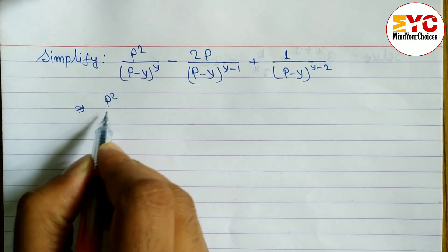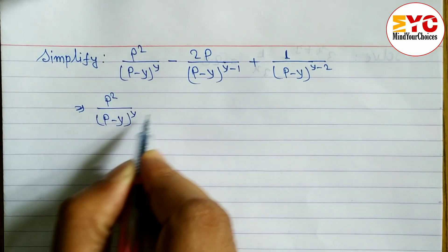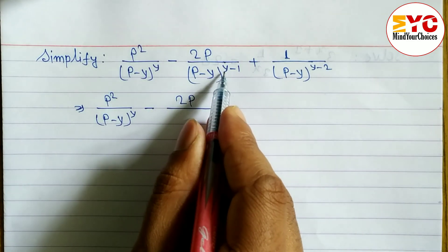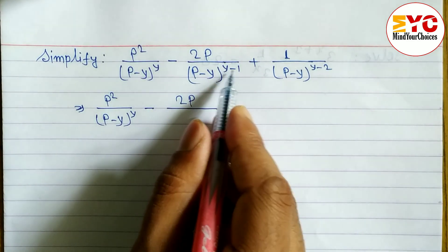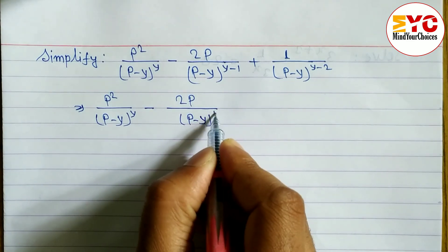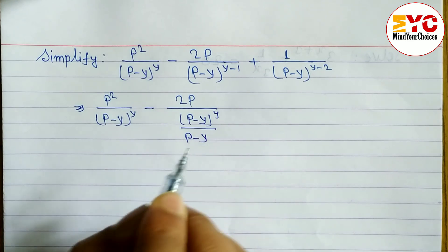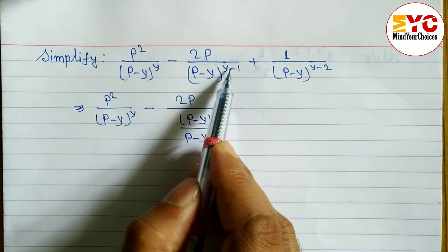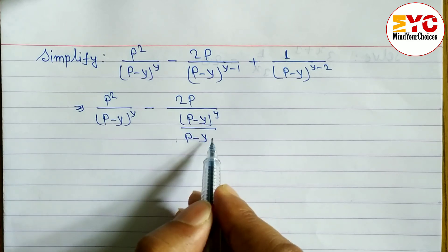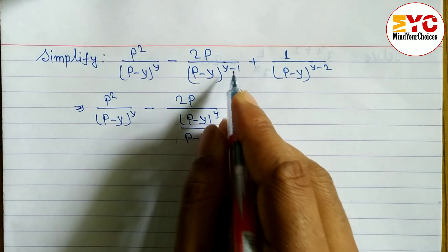Here we have p² / (p−y)^(y−2) multiplied by p / (p−y)^(y−1). We can write (p−y)^y in the numerator. The bases are the same and in division we subtract the powers.